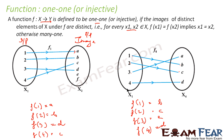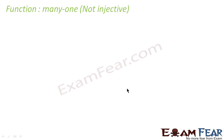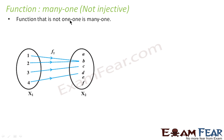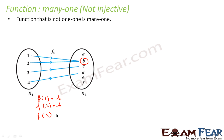A function that is not one-one is called a many-one function. For example, if you give input 1 you get output b, and if you give input 2 you also get output b. So f(1) = b, f(2) = b, f(3) = c, and f(4) = d. The outputs are not distinct — two values 1 and 2 share the same output. Such a function is called many-one.